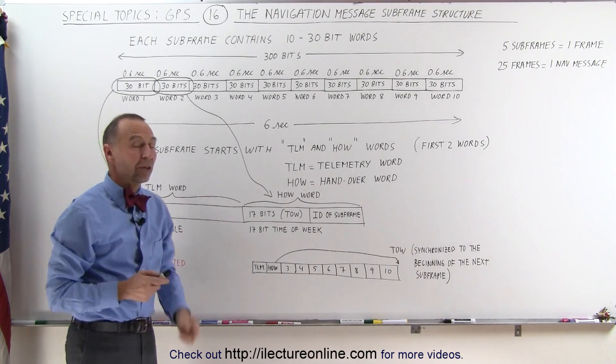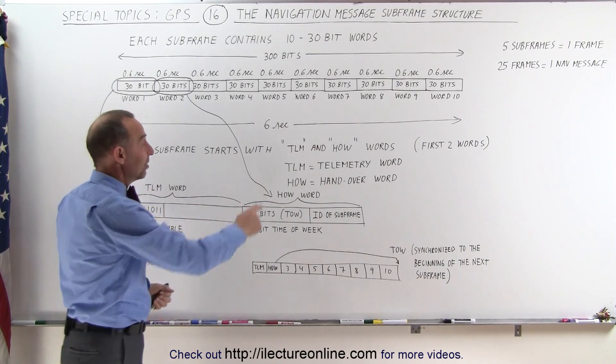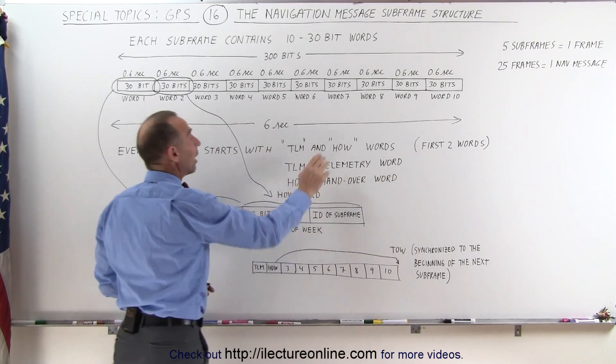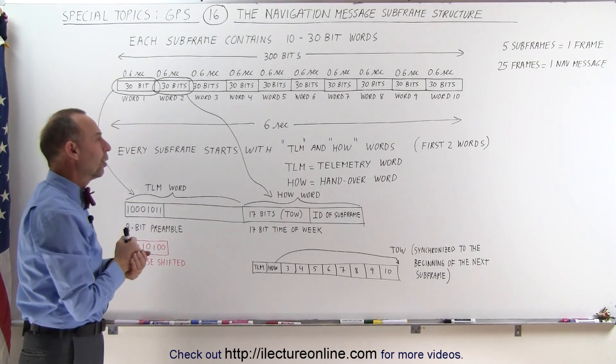Every subframe starts with a TLM and a HOW word. What does that mean? A TLM stands for telemetry, so telemetry word, and the HOW stands for the hand-over word. What is contained in those two words?